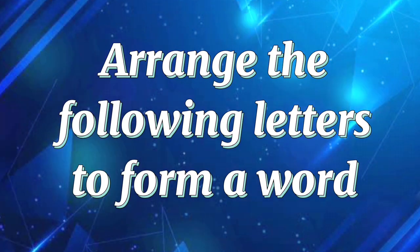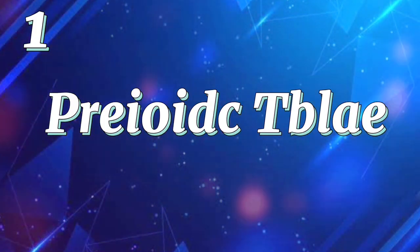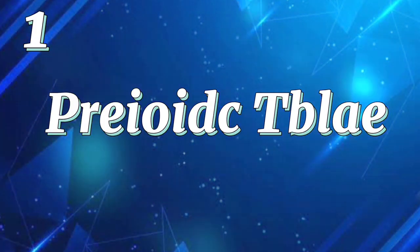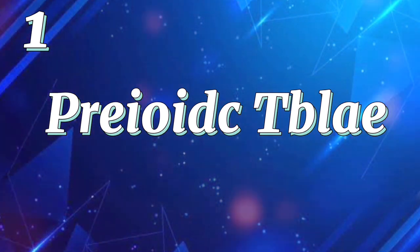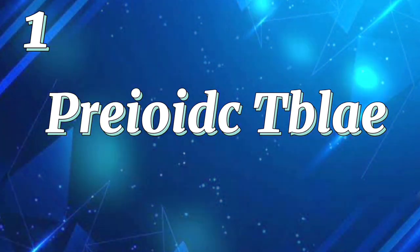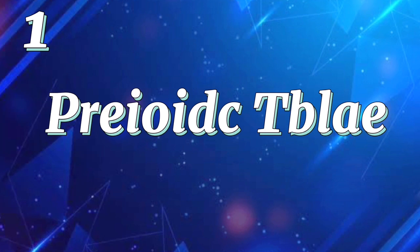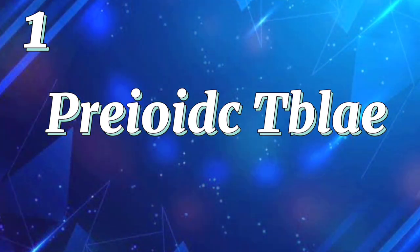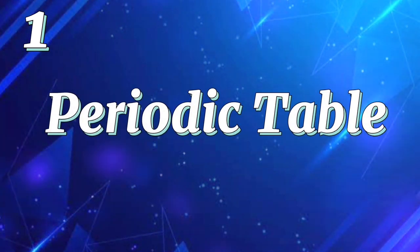All right, let's begin our lesson by answering the following scrabble break. Arrange the following letters to form a word. Number 1. It is a tabular display of the chemical elements which are arranged by atomic number, electron configuration, and recurring chemical properties. This is periodic table.